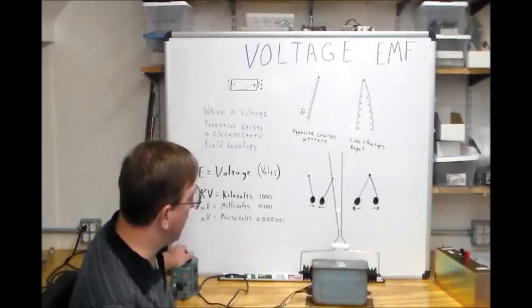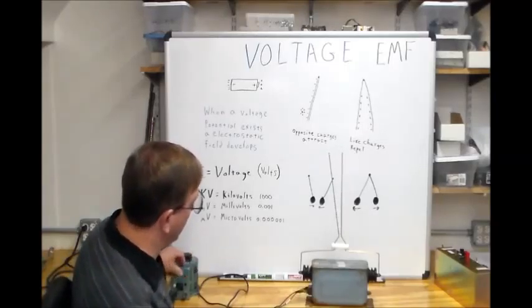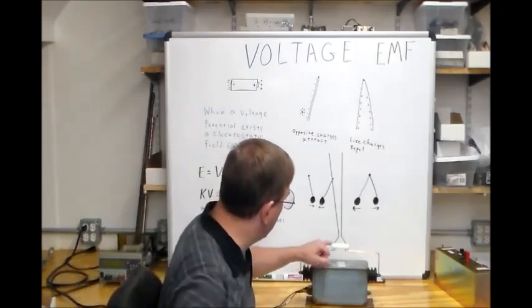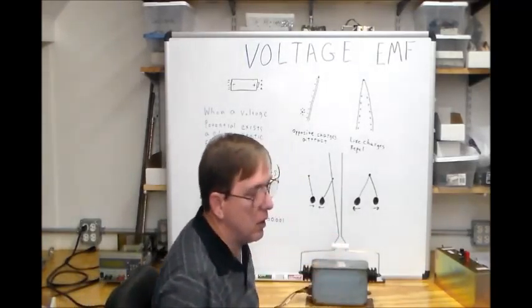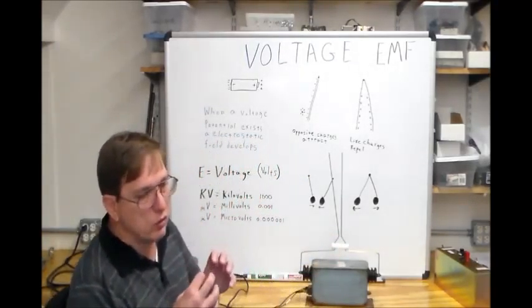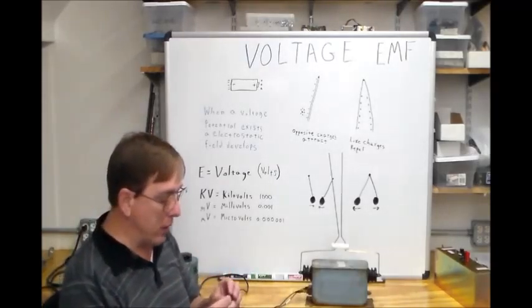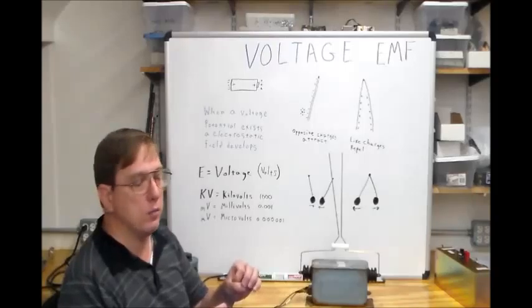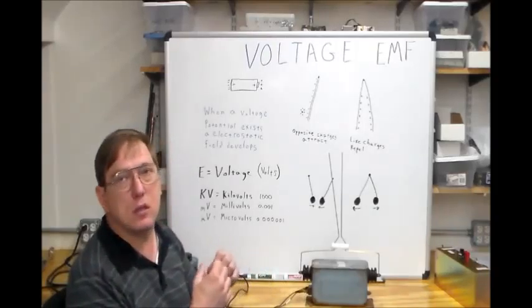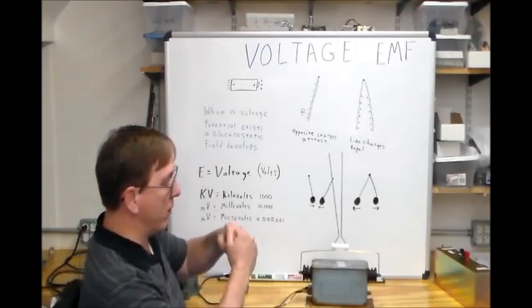And you can see that the conductive path is established by this field. And what is happening is that as this field becomes stronger and stronger, the air breaks down. What electrical breakdown is, is that you have your little atoms with your electrons rolling around. And this force, this electrostatic force, this EMF,